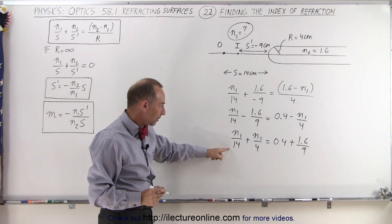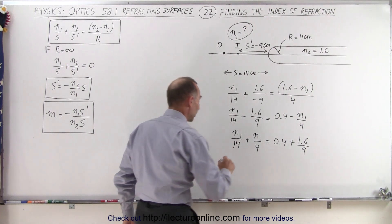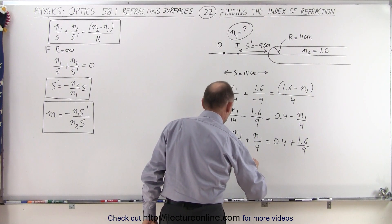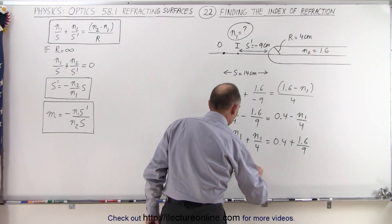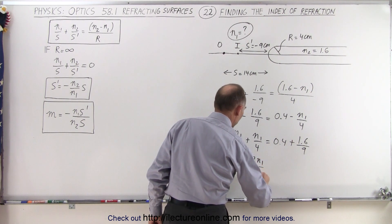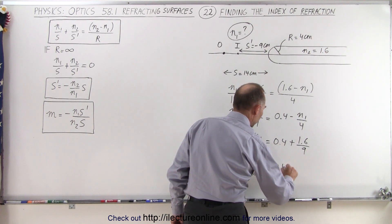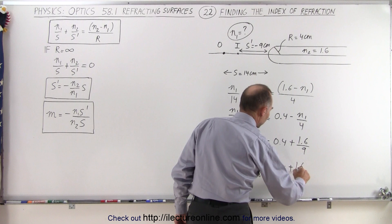Now we have a common denominator here equal to 28. So 14 goes into 28 twice, that's 2 times n1 over 28, plus 4 goes into 28 seven times, so 7n1 over 28 equals 0.4 plus 1.6 divided by 9.